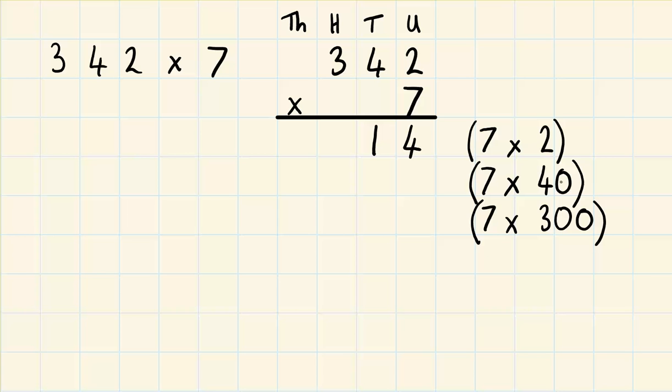So the next one is 7 times 40. So it's a multiple of 10. 40 is a multiple of 10. So 7 times 4 is 28. So we use our times tables knowledge, and then we just turn that back into a multiple of 10. So it would be 280.